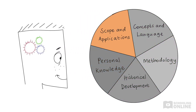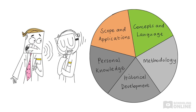First, we can look at scope and applications. This aspect covers the range of knowledge in the area and how the knowledge is used. Next, we can unpack relevant concepts and language. This element explores the key ideas in each area and how we produce and describe knowledge using technical, area-specific language.